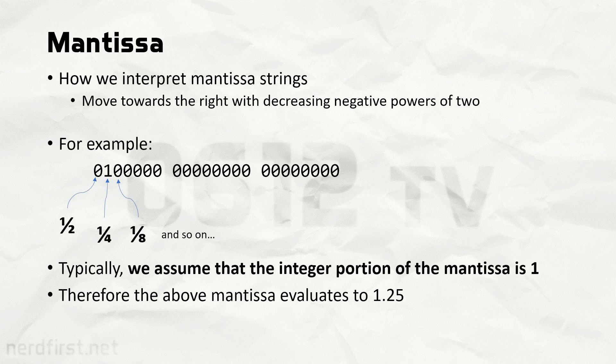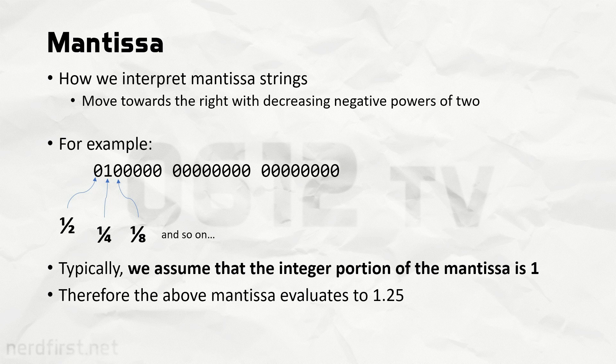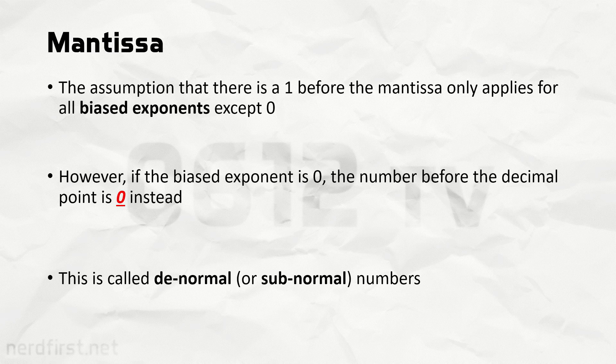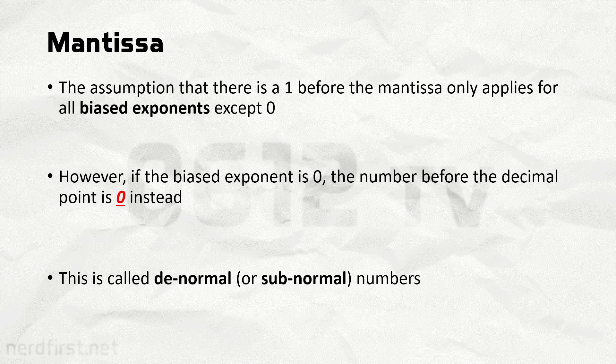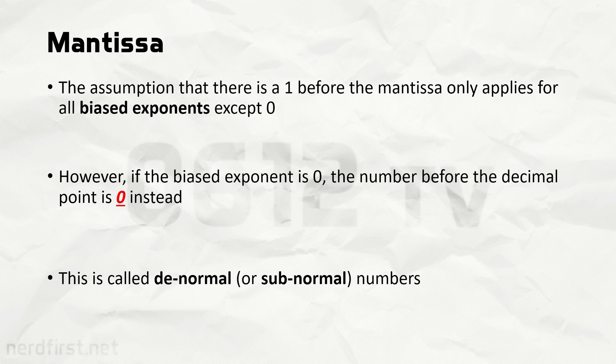But why do that? Well, as it turns out, it does actually affect something else. When your biased exponent is zero, your mantissa is interpreted differently. You see, normally when we work with our mantissa, we assume that it's one point something, right? We always assume that there is a leading one, even though it's not part of the mantissa itself. And the mantissa basically covers the rest of the stuff after the decimal point. However, when your biased exponent goes down to zero, we instead assume that there is a zero in front of the decimal point. These are called subnormal or denormal numbers.